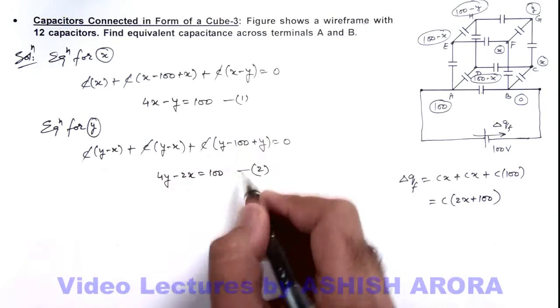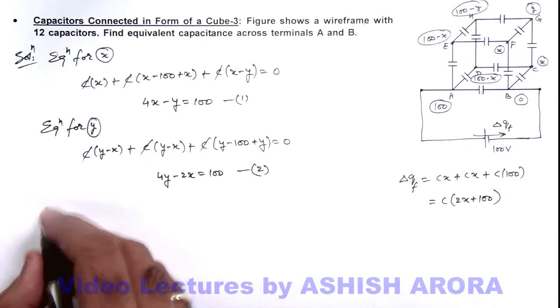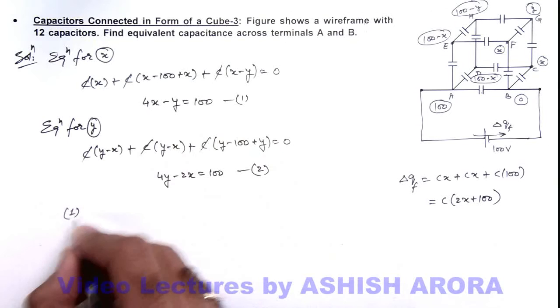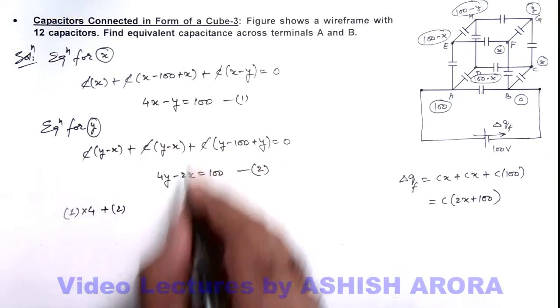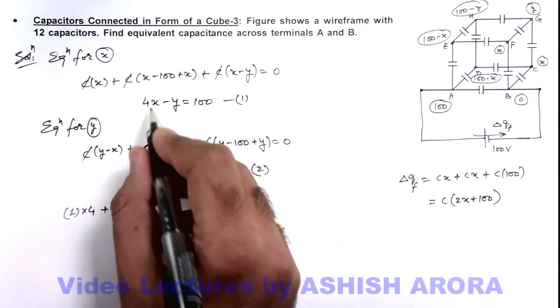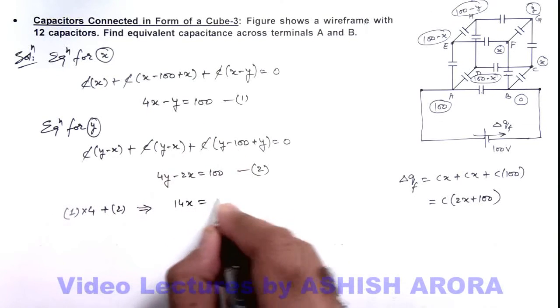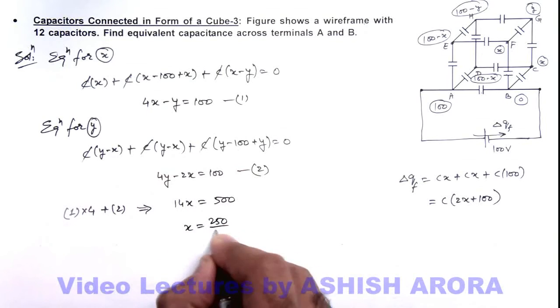So 1 and 2 are two linear equations in two variables, so we can directly solve these equations as 1 multiplied by 4 plus 2. So if we multiply with 4 and add in 2, this y gets cancelled out and this will result as 16 minus 2, 14x is equal to 500, so the value of x we are getting is 250 by 7 volts.